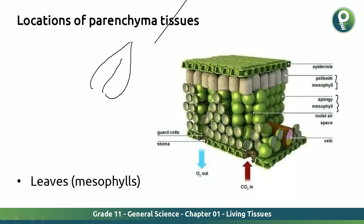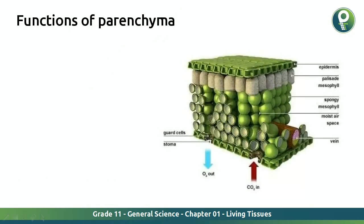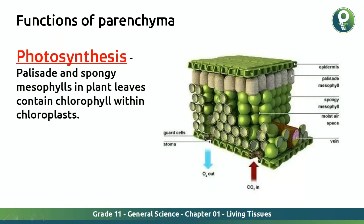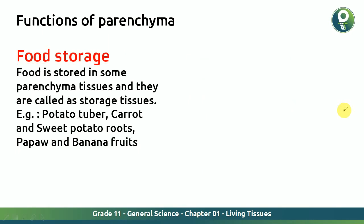Now let's understand the functions of parenchyma tissues. The first function is photosynthesis. The palisade mesophyll and spongy mesophyll in plant leaves contain chlorophyll within chloroplasts. The plant needs sunlight for photosynthesis, and without parenchyma tissue performing this role, it won't make food. Photosynthesis takes place within the chloroplast, which is present in parenchyma tissue. The second function is food storage — food is stored in some parenchyma tissues, and they are called storage tissues.